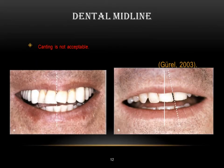In other cases, there is a condition called canting, which means the dental midline is not parallel to the facial midline. In addition to the shifting, it is not parallel. Canting is not acceptable and needs to be treated before we design our smile.